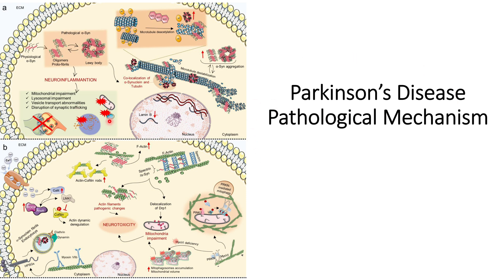Now let us go to Panel A. The main reason for Parkinson's disease is the formation of alpha-synuclein aggregates due to disruption in cellular homeostasis. Alpha-synuclein will form Lewy body-like structures and then nucleate, disrupting the structure of microtubules — that is, microtubule destabilization. However, the correct mechanism by which this occurs is not yet known.